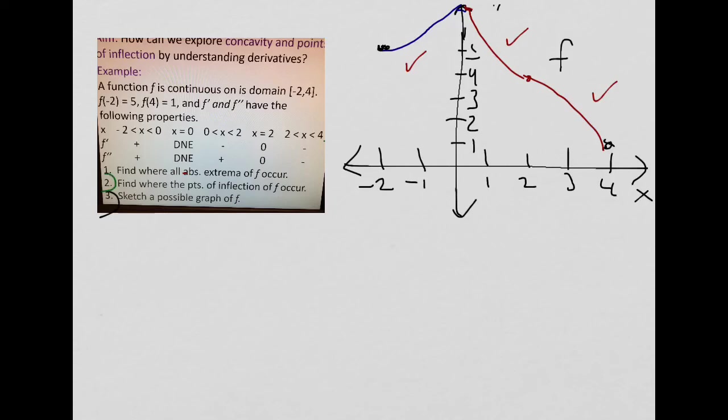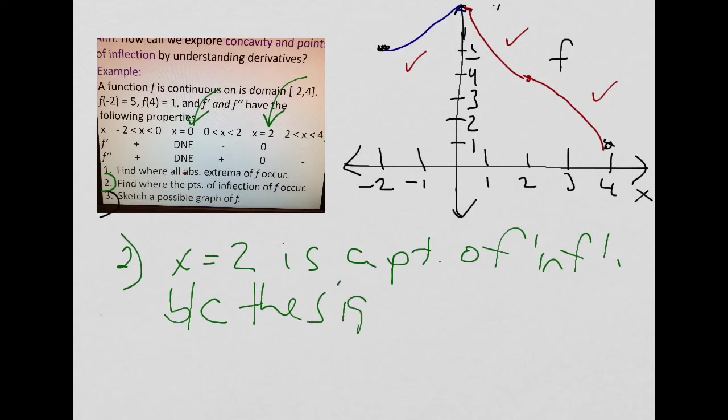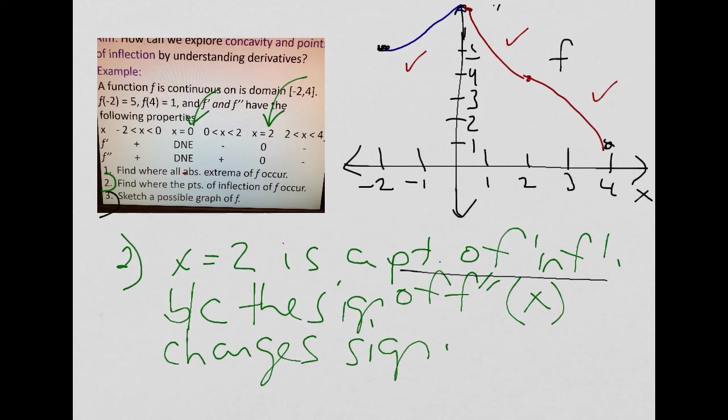So, I just want to go back and answer 1 and 2. So, since we did 3, it seems like we're heading backwards. Number 2. So, number 2, it says find where points of inflection occur. So, once again, that could have been x equals 0, could have been x equals 2, but it was indeed where x is equal to 2 because the sine of f double prime of x changes sine. Now, when you talk about point of inflection, it doesn't matter if it changes sign from positive to negative or negative to positive. It's still a point of inflection.